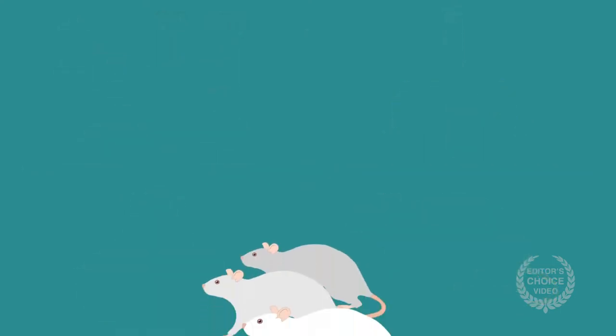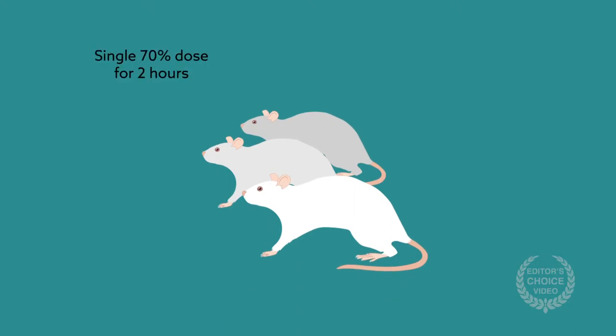In most experiments, a group of male rats received either a single 70% dose of nitrous oxide for two hours, a series of 80% doses, or no gas, and were injured or not in the case of the controls. In some experiments, the rats also received folic acid supplementation, which helped spur axonal recovery.